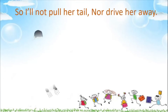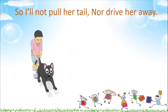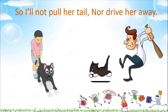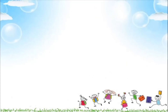Then she says: 'I'll not pull her tail nor drive her away.' She is saying she will never pull her pussy cat's tail — imagine someone pulling your hair, it will hurt a lot, isn't it? So you should never pull the tail of a cat. And see this man trying to drive that pussy cat away — the poor pussy cat is running. She's saying: I will not do any of this. I'll not pull her tail nor drive her away.